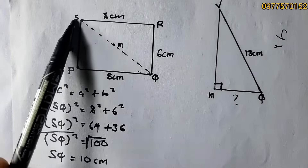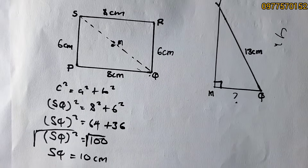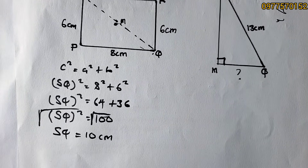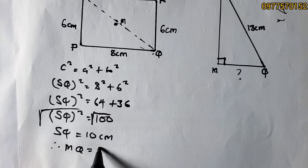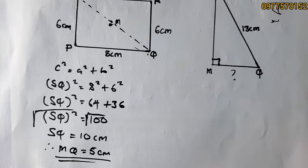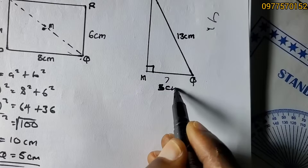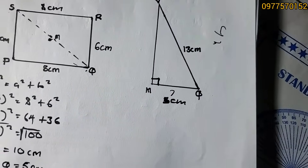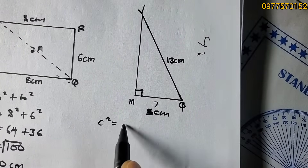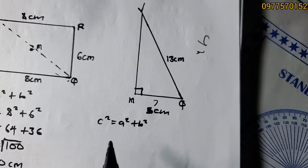Since SQ is 10 centimeters and M is the midpoint, MQ is half of SQ. Therefore MQ = 5 centimeters. Now having found MQ, we can substitute it into the Pythagorean theorem to find the perpendicular height MV. We use: c² = a² + b², where c² is the hypotenuse VQ.